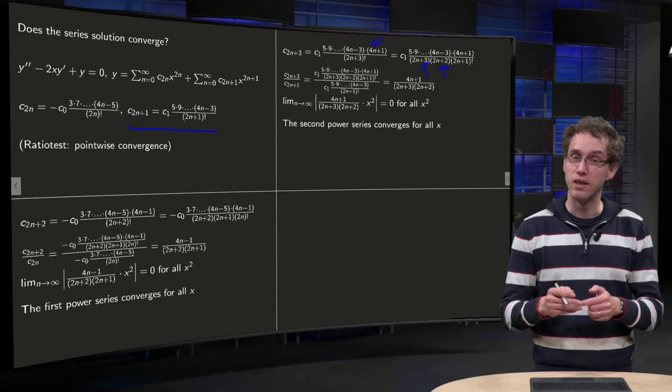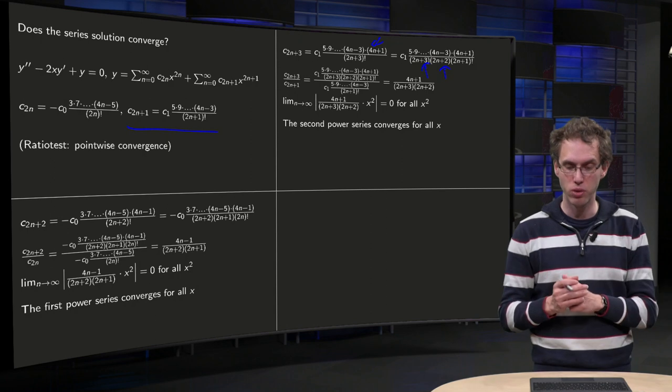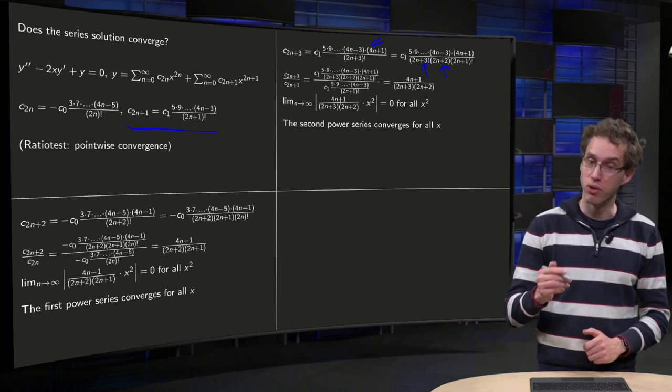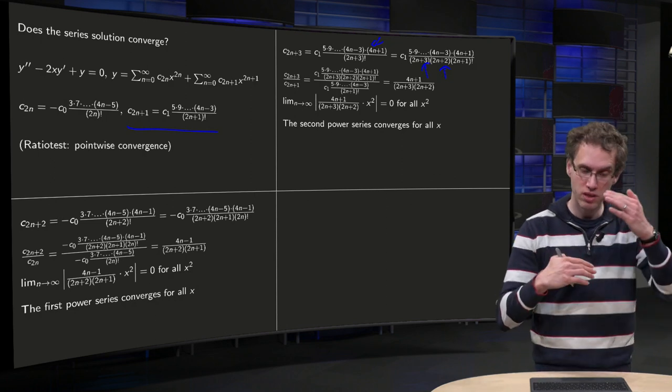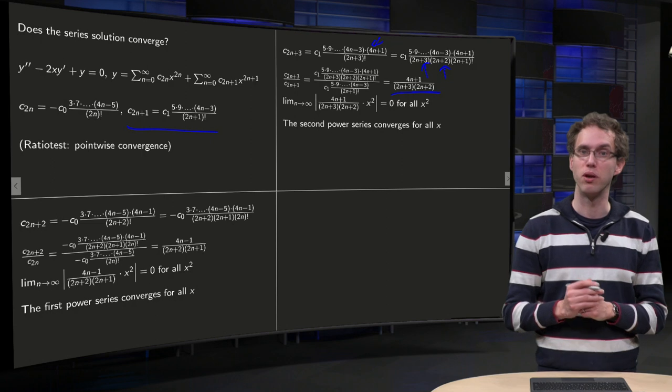So the extra terms with respect to c_{2n+1} are the 4n+1 in the numerator, and 2n+3 and 2n+2 in the denominator. So if you divide c_{2n+3} over c_{2n+1}, you are left with only this term over here.